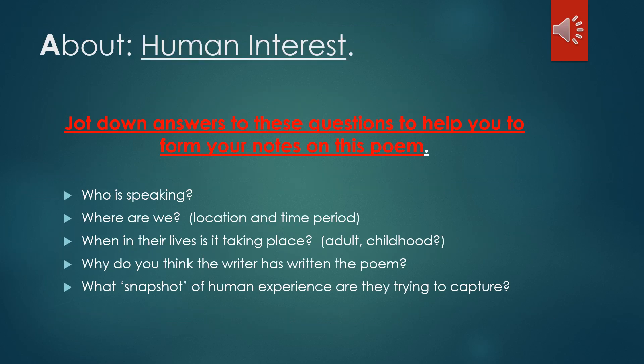Let's have a go at relating AMITY to Human Interest. The first thing to do is to have a reread of the poem and think about what Human Interest is about — that's your A from AMITY. Pause the video here and jot down your answers under the subheading 'about' to the questions on the screen, and that will help you to form your notes for this section on the poem.